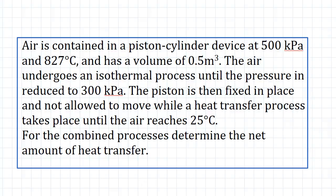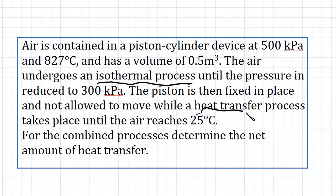The question is asking us, for the combined processes, to determine the net amount of heat transfer. So what does it mean when it says combined processes? The system initially undergoes this isothermal process — that's our first process, we can call that process 1-2. And then the piston is fixed in place and not allowed to move, and then a heat transfer process takes place.